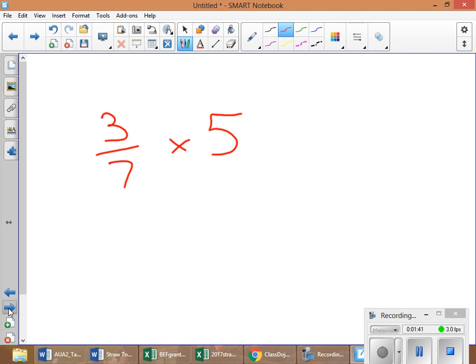Next problem. We have 3/7 times 5. All I want you to do is just put the 1 under the 5 and multiply straight across. 3 times 5 is 15. And 7 times 1 is 7. Now, as you notice, that's also called an improper fraction. I don't like that. How many times does 7 go into 15? 2 times. With how many left over? 1/7. There's your answer right there. So, 3/7 times 5 equals 2 and 1/7.